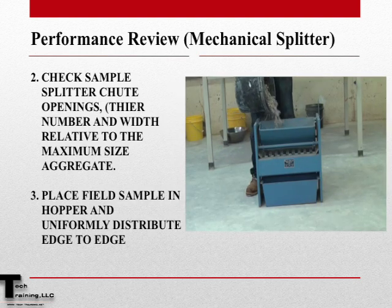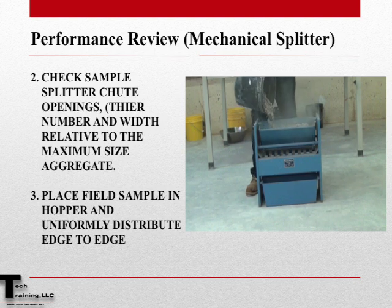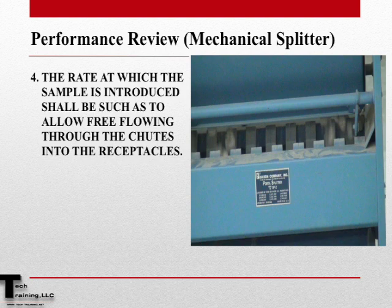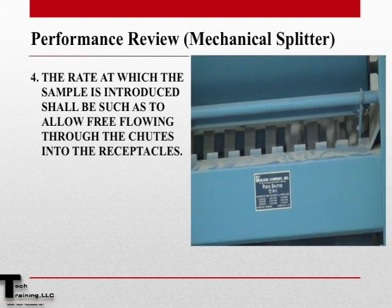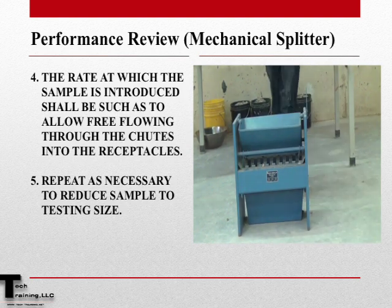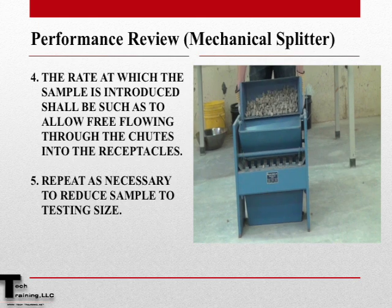Place the sample in the hopper and uniformly distribute the sample edge to edge. After placing the sample in the hopper, open the hopper — but only wide enough that the rate at which the sample is introduced into the chutes allows free-flowing of the aggregate into the receptacles or straight edge pans. These steps are repeated until the field sample has been reduced to the appropriate testing size.